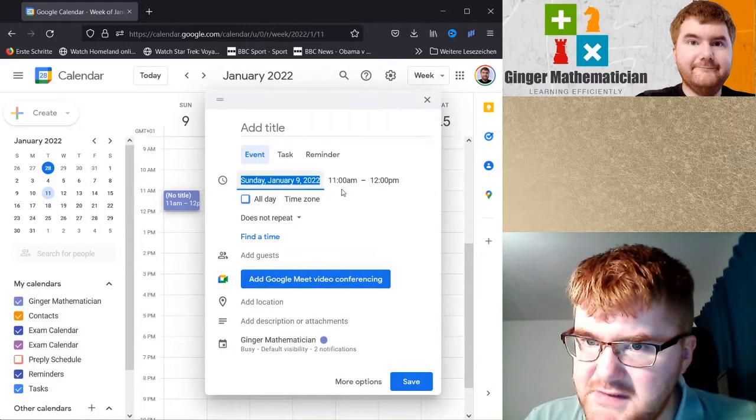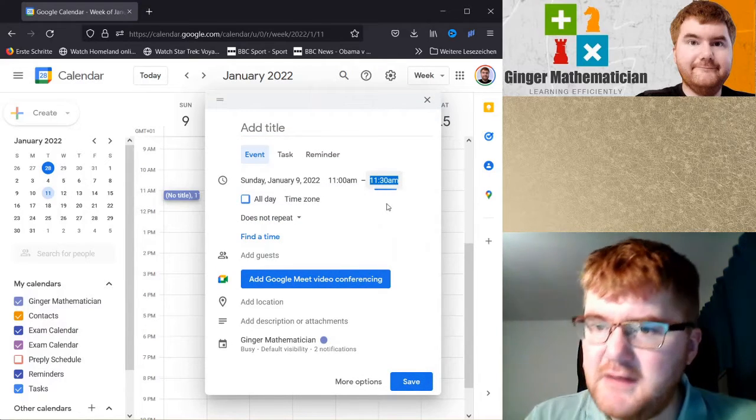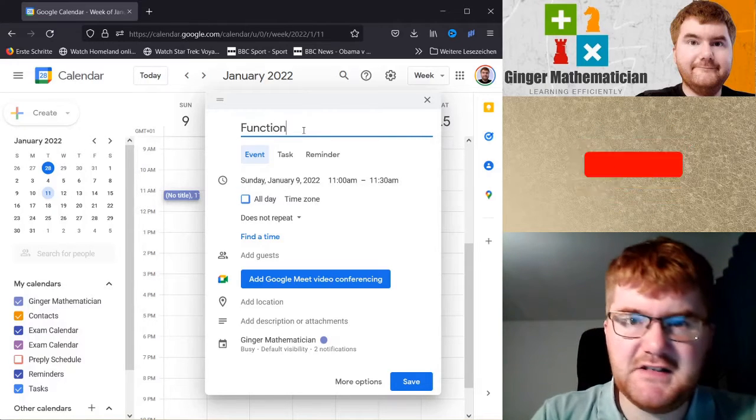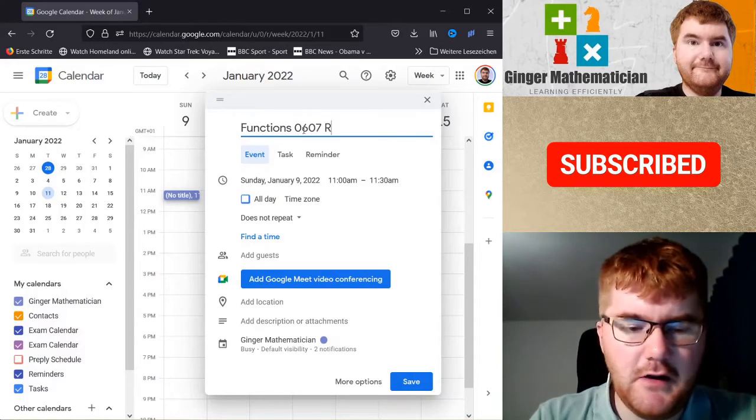Actually, I'm going to reduce this down slightly. So I'm going to say 30 minutes and we're going to call this functions. So this can be functions 0607 revision.